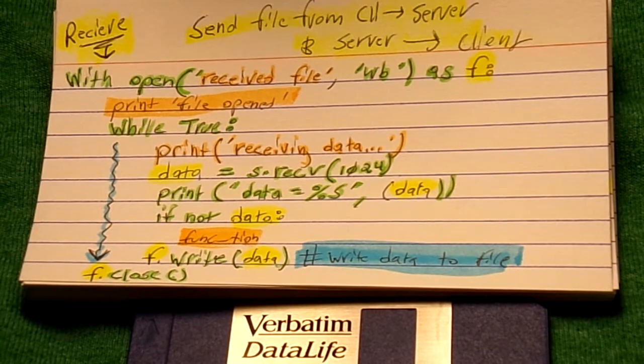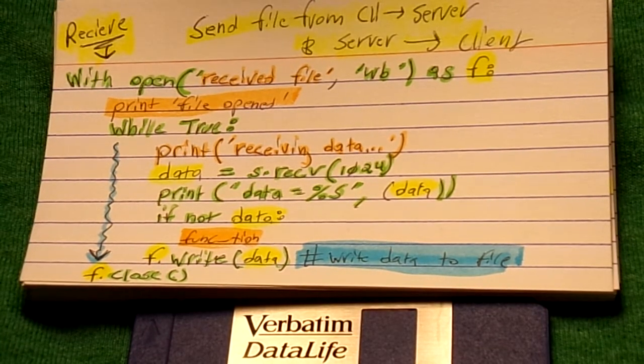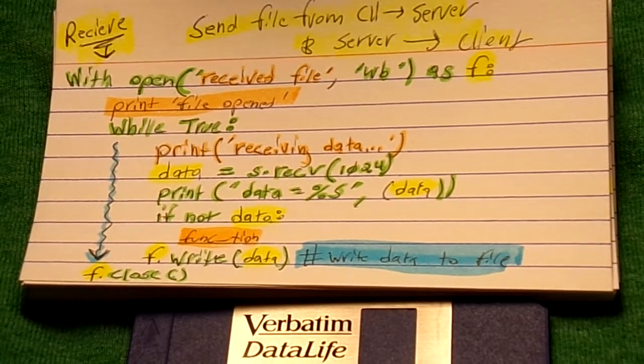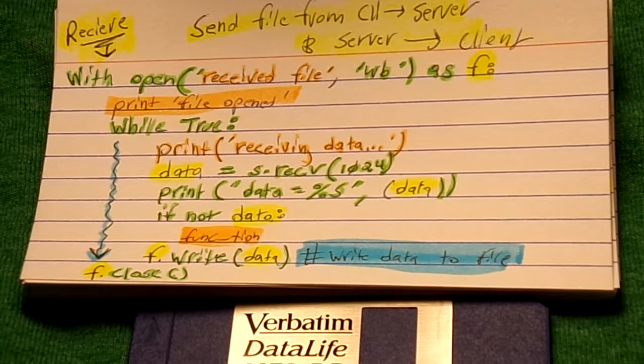So then from there, this one we will just actually print the data, and then it's going to say if there isn't any data, call this function, and that function will probably just say something like, file's not there, etc.